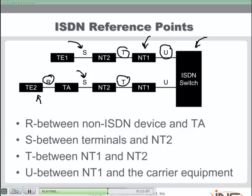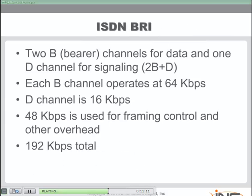With ISDN Basic Rate Interface connectivity, there are two bearer channels for carrying data and one D (delta) channel for signaling — often abbreviated as 2B+D. Each bearer channel operates at 64K, and you can run multilink PPP over them to achieve 128K of bandwidth for sending data.